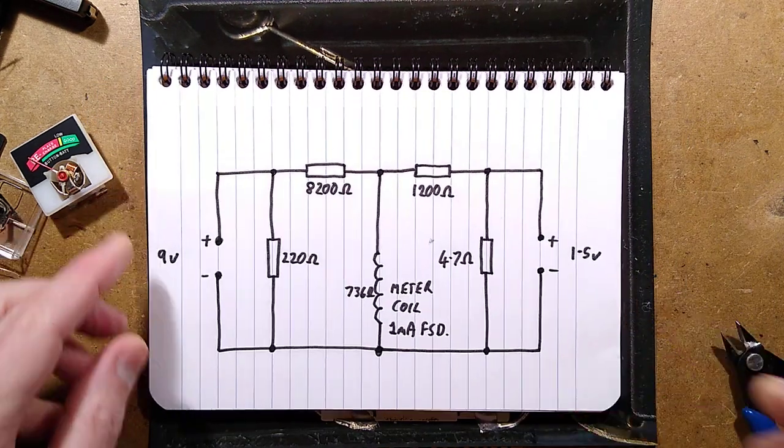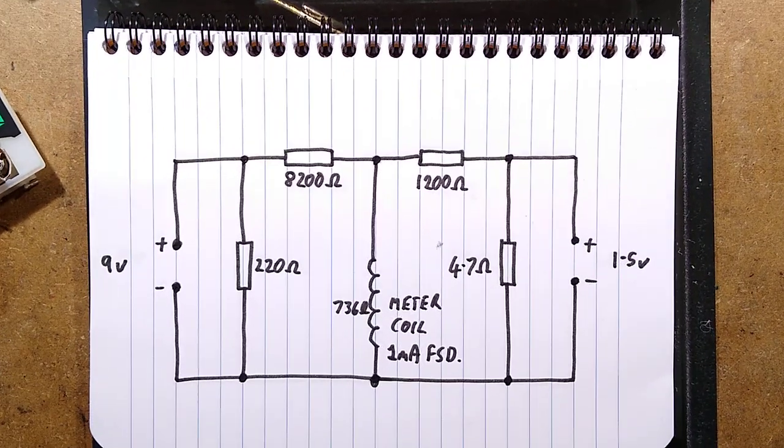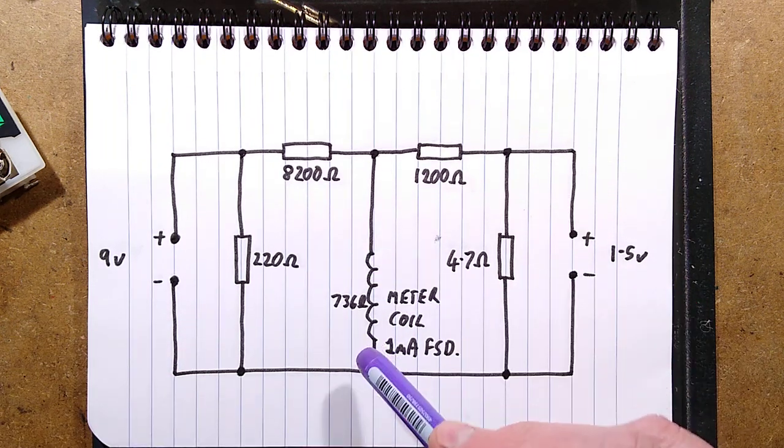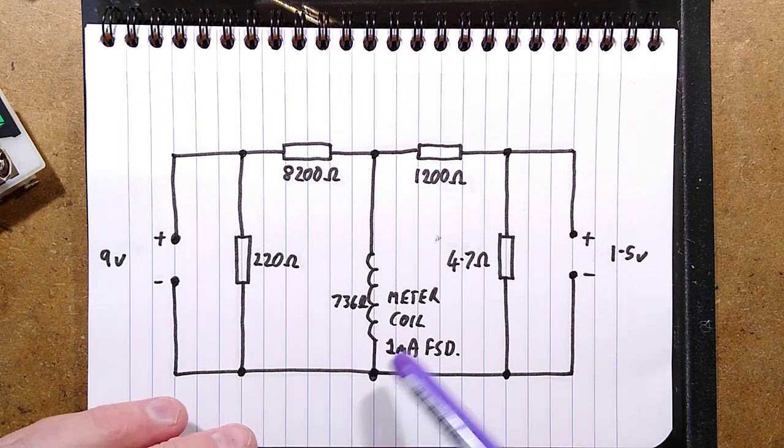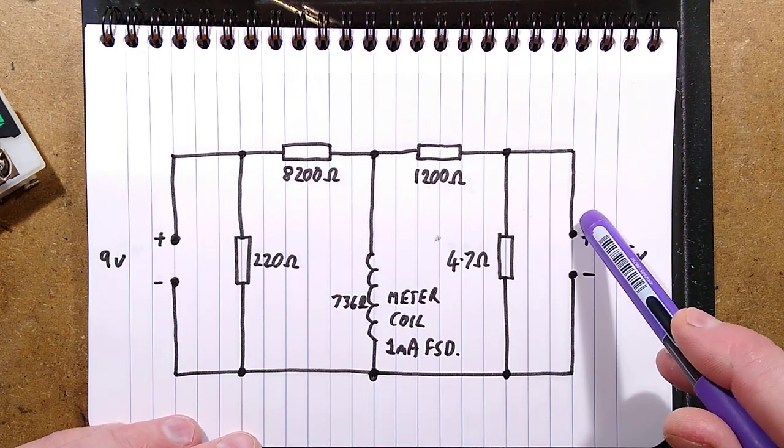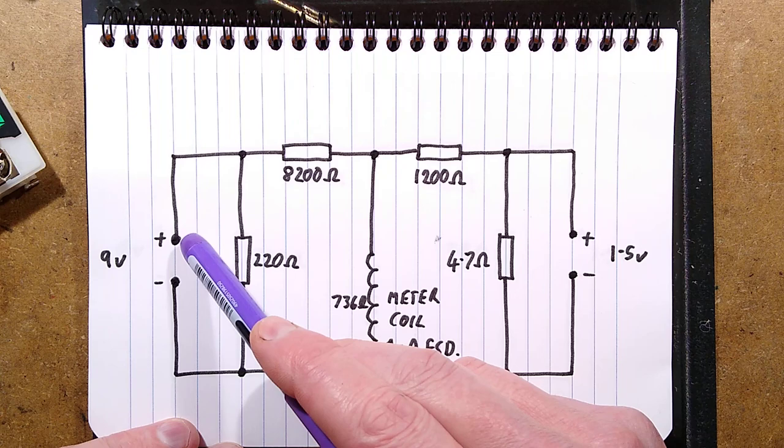Here's the schematic. I shall zoom down a little bit closer. So here we have the meter coil with its 736 ohms. It's quite an odd value. And there is the 1.5 volt battery connection. And here's the 9 volt battery connection.